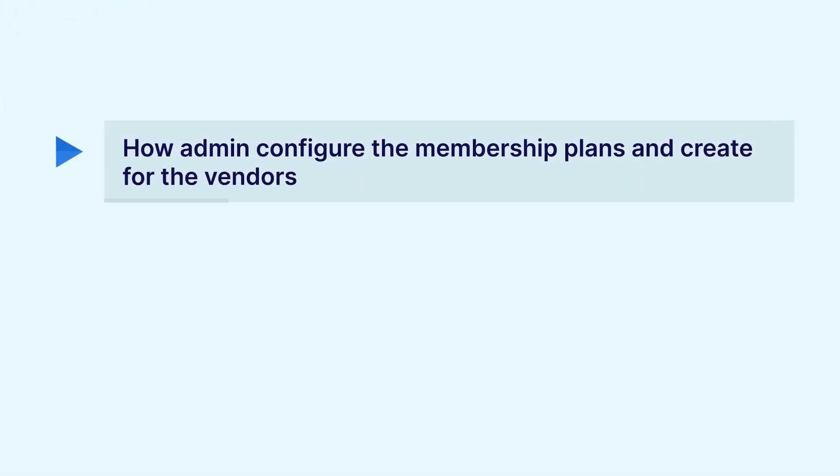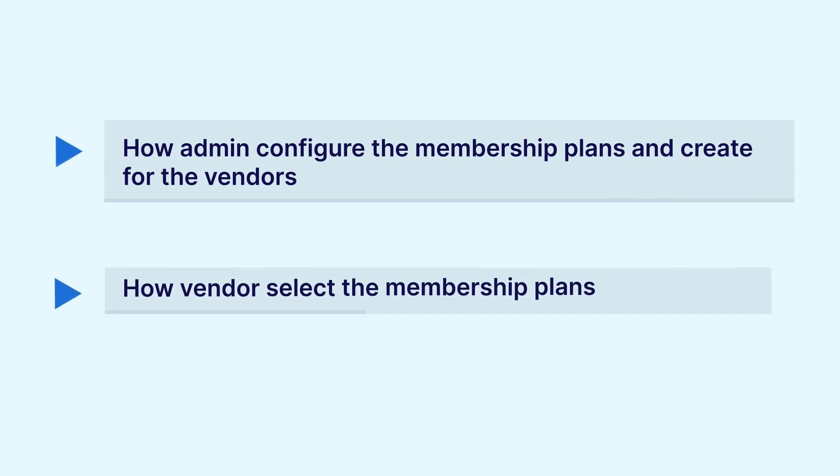As we all know about the admin earnings, admin can earn by setting up different commissions for their vendors. But do you know that admin can also earn by creating different membership plans for their vendors, and the vendors can select from them? In this video, we will see how admin configures and creates membership plans for vendors, and how vendors select those membership plans.